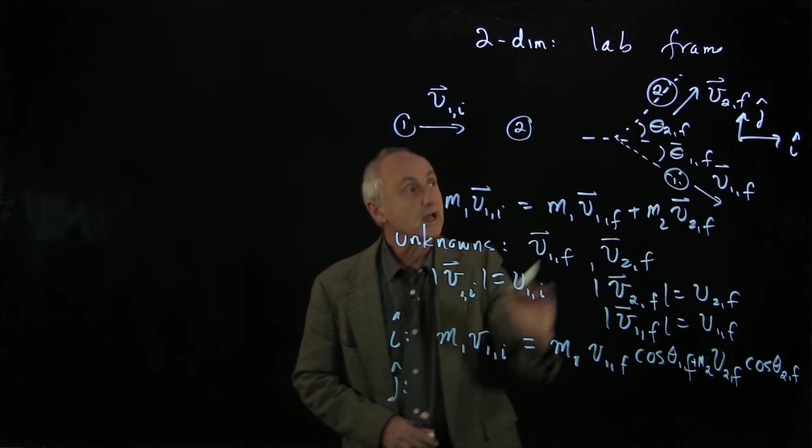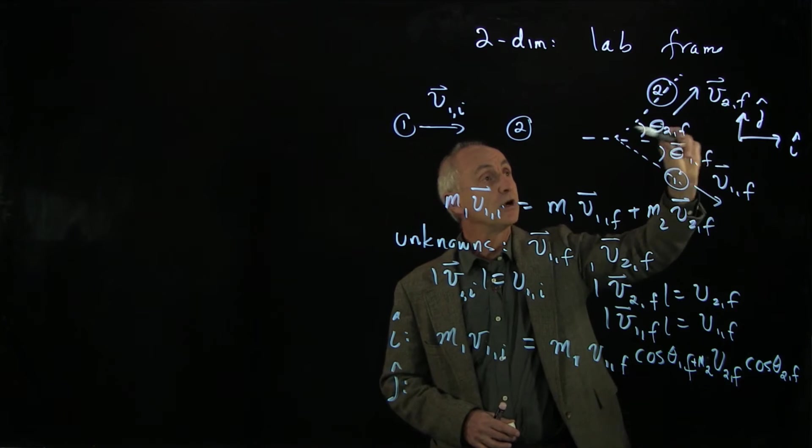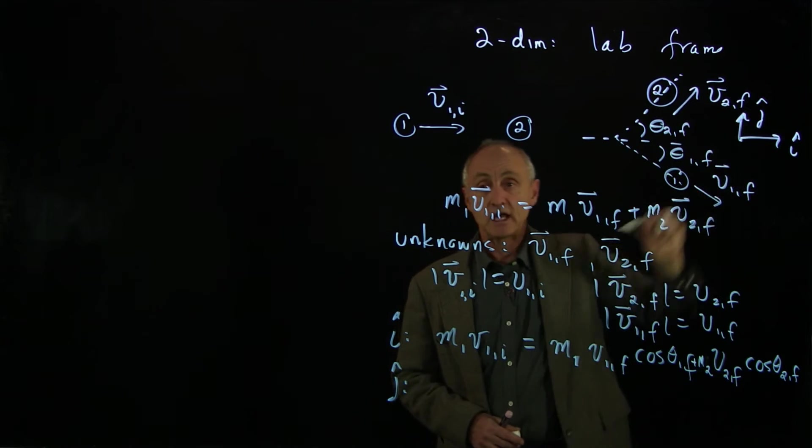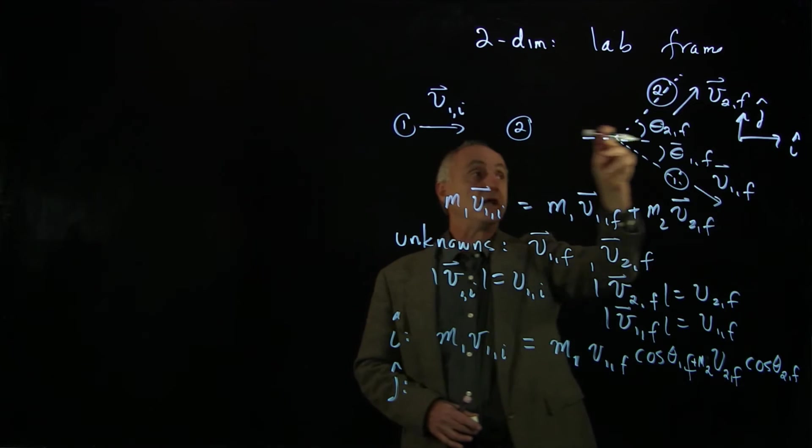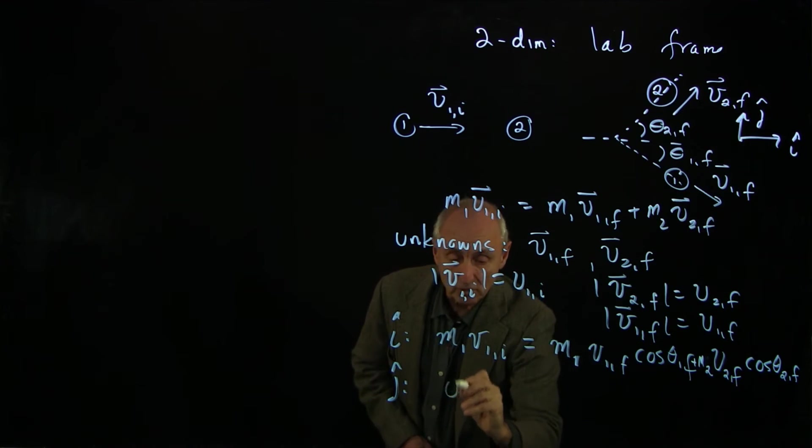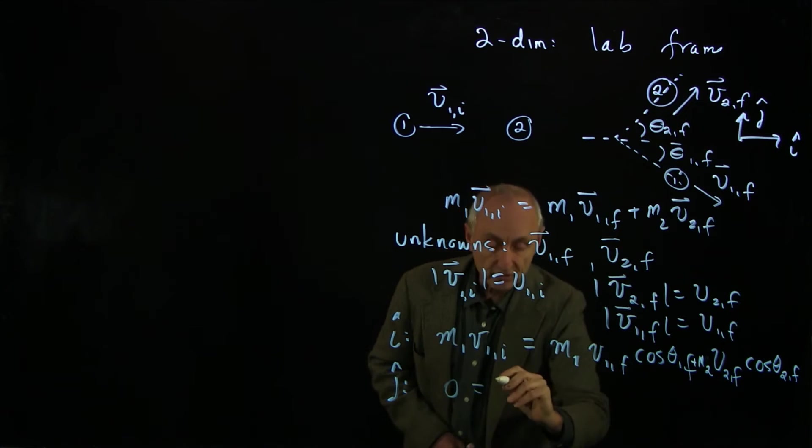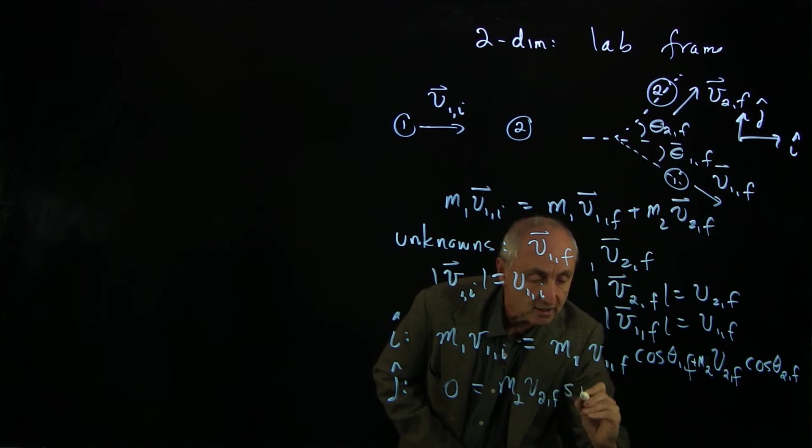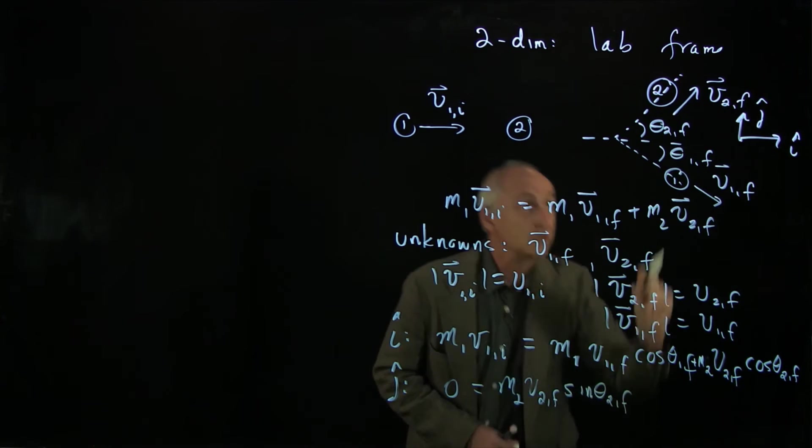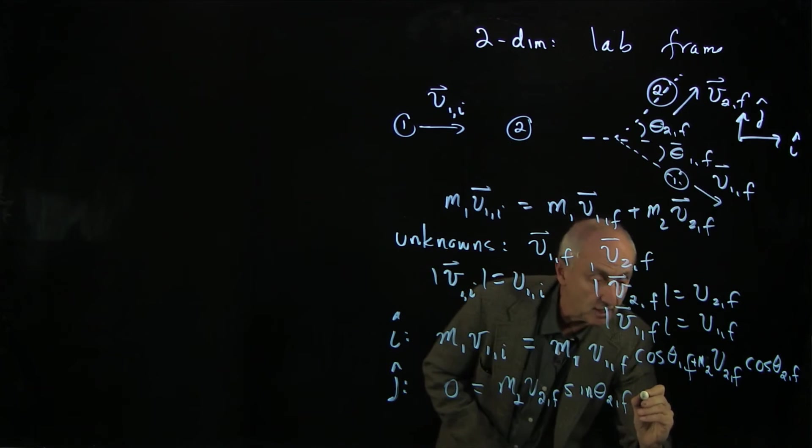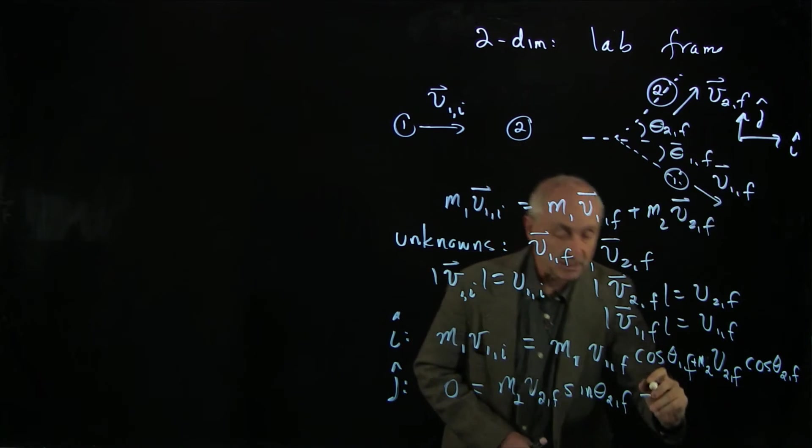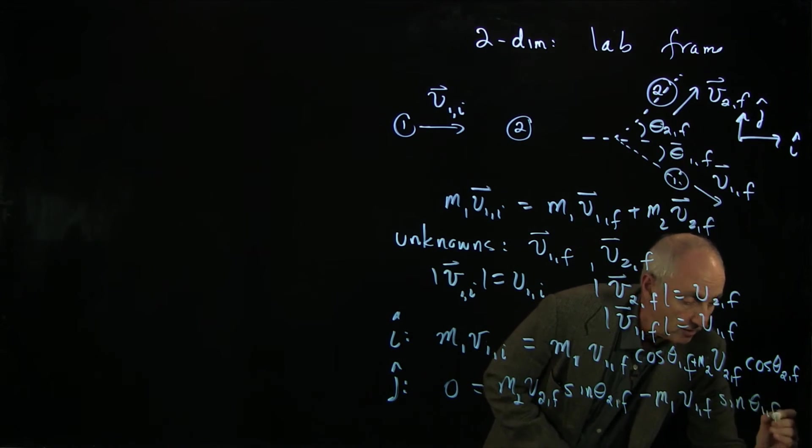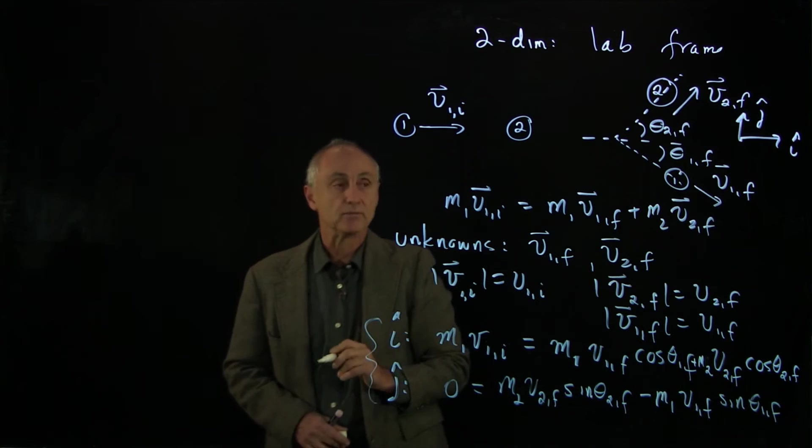Now, the j hat direction, remember, we have to be careful, because we're taking positive j hat up. So our particle 2 has a positive component in the j direction, and our particle 1 has a negative component in the j direction. The incoming momentum, there's no momentum in the j direction, so we have a 0. And that's equal to positive m2 v2 final, and that's a sine theta 2 final. Now, here's where we have to be careful, because this one is negative. The component is in the negative j hat direction, and we have m1 v1 final, sine theta 1 final. And these two represent our momentum equations.